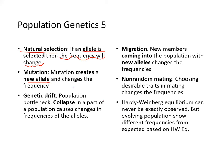You can have multiple alleles in a population. Genetic drift — an example is a population bottleneck. A collapse in part of a population causes changes in allele frequency. Think of a natural disaster that wipes out a large portion of a population — that's an example of genetic drift.